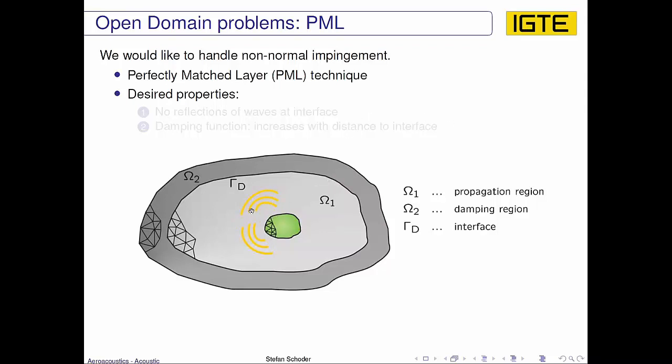We have again this green body which is radiating. We would like to have an open domain problem, and now we do not only consider the light gray shaded body which is our computation domain, we also consider an additional layer which is defined by the damping region Ω2. The idea is now we would like to design a PML such that we have no reflections of waves at the interface between Ω1 and Ω2. And we would like to have a damping function in Ω2 which increases with the distance to the interface, so that as soon as the waves enter the second domain, they are increasingly damped with the distance they travel.